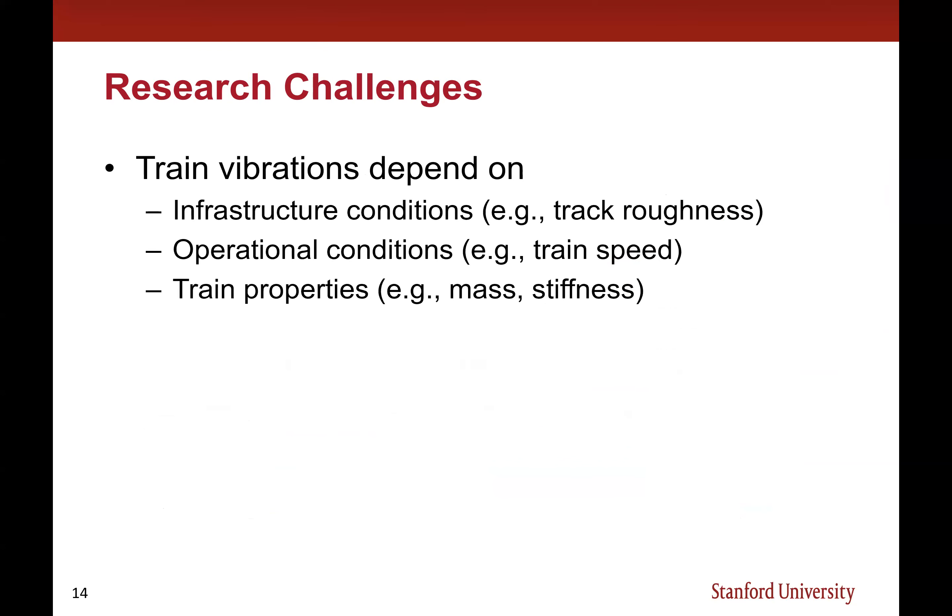To address these issues, we developed what I call 'Thomas the Tank Engine.' The idea is that regular operational trains travel through this rail network every day, sometimes multiple times a day. Why not make these trains smarter so they can collect information about the infrastructure as they travel? We use these vehicle structures as sensors to collect data, diagnose damage on roads, railways, and bridges using only the onboard sensing system during regular operation — no extra sensors needed outside the vehicles.